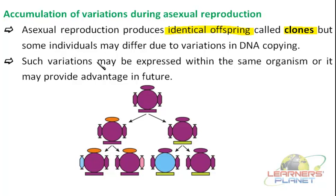During this, in some of the species, some variations may occur — because of the error in the copying of DNA. This variation which has occurred in the DNA may get expressed in the same individual or it may remain unexpressed. It is present but not expressed in that particular generation or organism. What is the advantage of this? This advantage may be provided in the future, or it may provide a disadvantage. Both sides are true. They can provide advantage in the future generations.